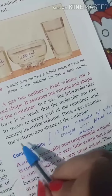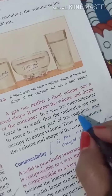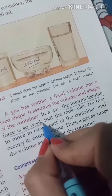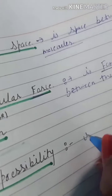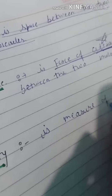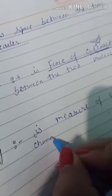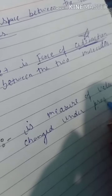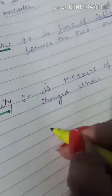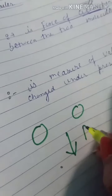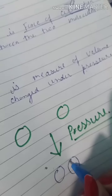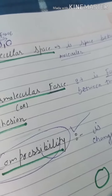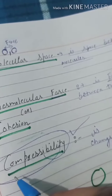Thus, a gas assumes the volume and shape of the container due to weak intermolecular force of attraction. Now, what is compressibility? Compressibility is a measure of volume change under pressure. When we apply pressure, the two molecules come closer to each other — this process is known as compressibility, or the tendency to compress molecules with the help of pressure.